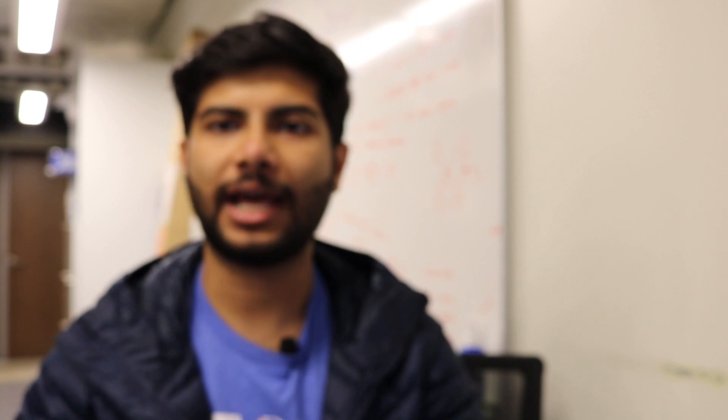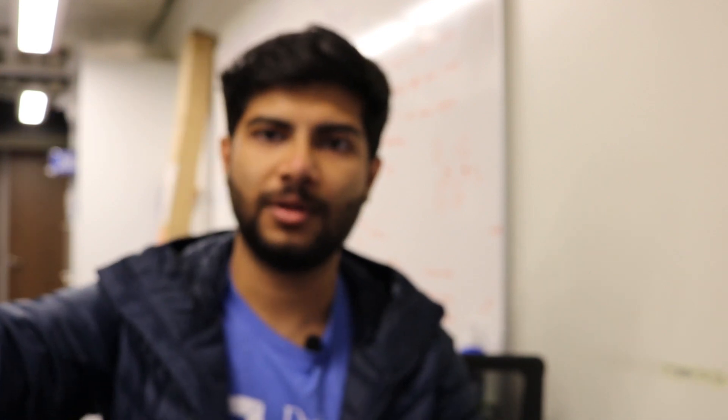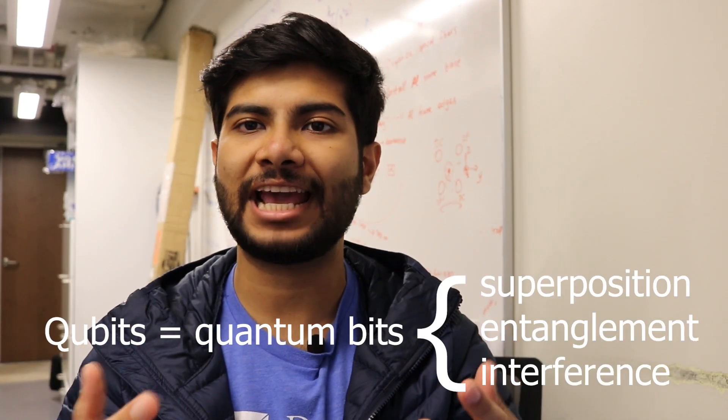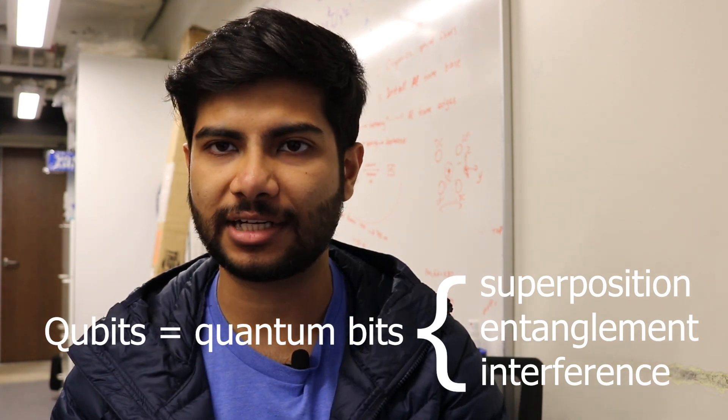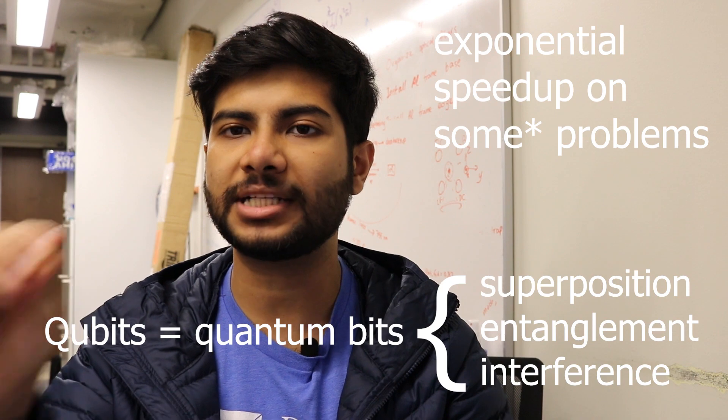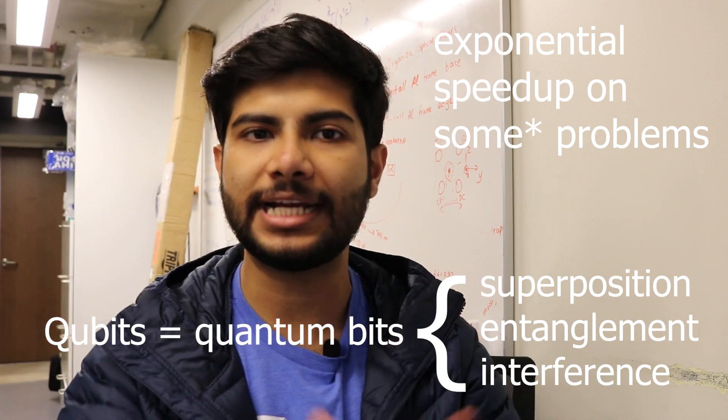Welcome to my lab at Duke. Quantum computers are very hyped because they promise to break encryption and solve the climate crisis and whatnot. But here in reality land, we know that we're still at the baby stages of this research and we have very far to go. The basics of quantum computers is this: qubits, or quantum bits, have superpositions and their wave functions can be entangled or interfered with each other, and using this we can solve some problems much better or faster than everyday digital computers.